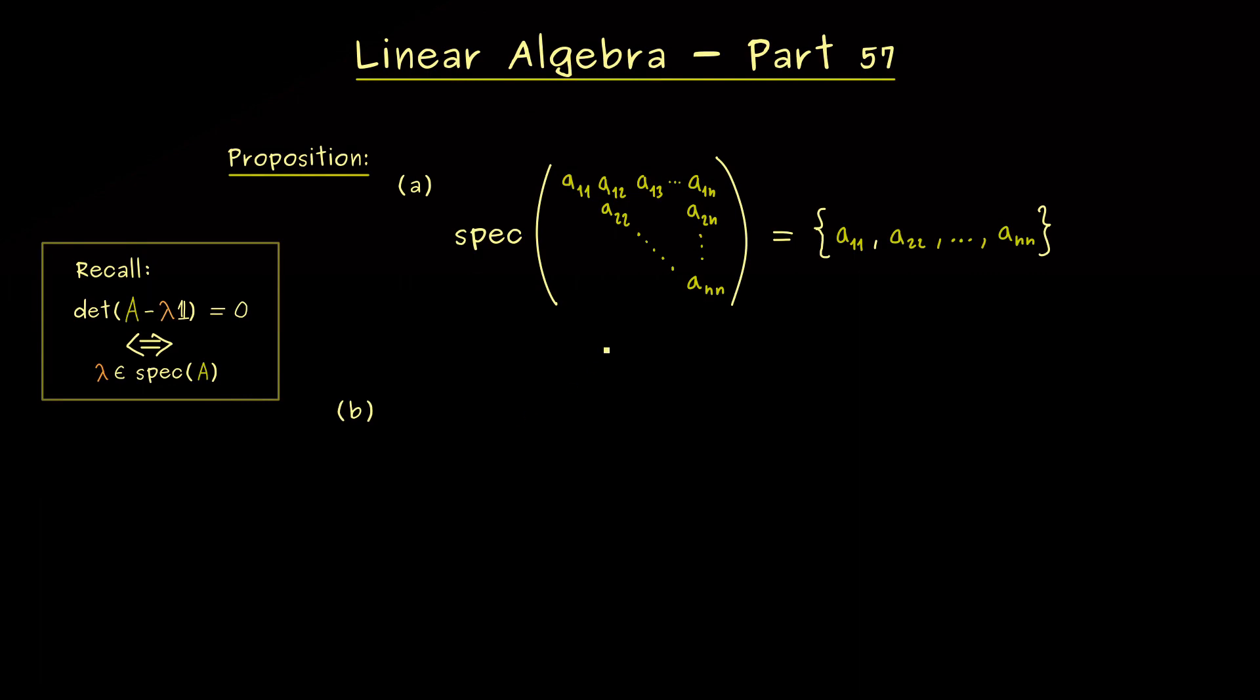And moreover also the algebraic multiplicity can be seen immediately. Okay, but maybe that's something we can discuss in the example below. First I want to show you that we can generalize this fact even to block matrices. This you might already know from our discussion of determinants. Some matrices can be decomposed into sub-matrices.